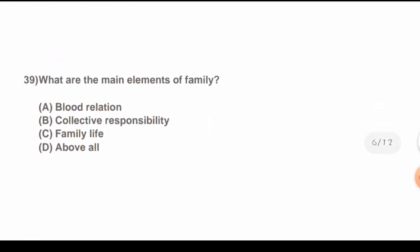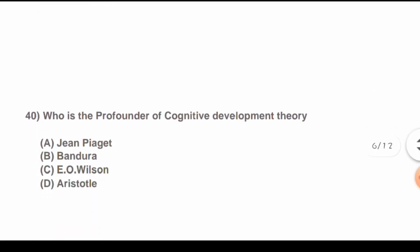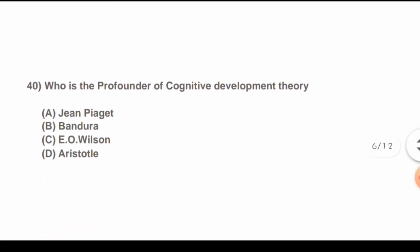Question 39: What are the main elements of family? Options are: A) Blood relation, B) Collective responsibility, C) Family life, D) All of the above. The correct answer is D) All of the above.